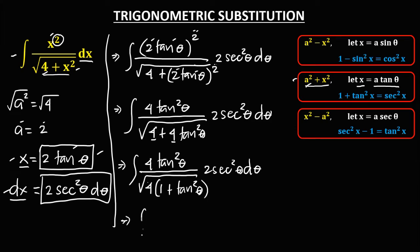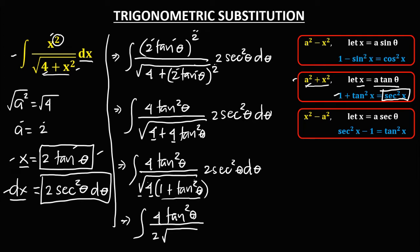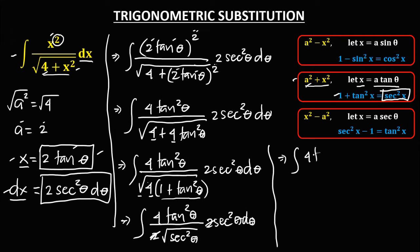Simplifying, we have the integral of 4 tangent squared theta over: since the square root of 4 is 2, and since 1 plus tangent squared theta equals secant squared theta by the Pythagorean identity, the square root of secant squared theta is secant theta. So we have 2 times 2 secant squared theta d theta.